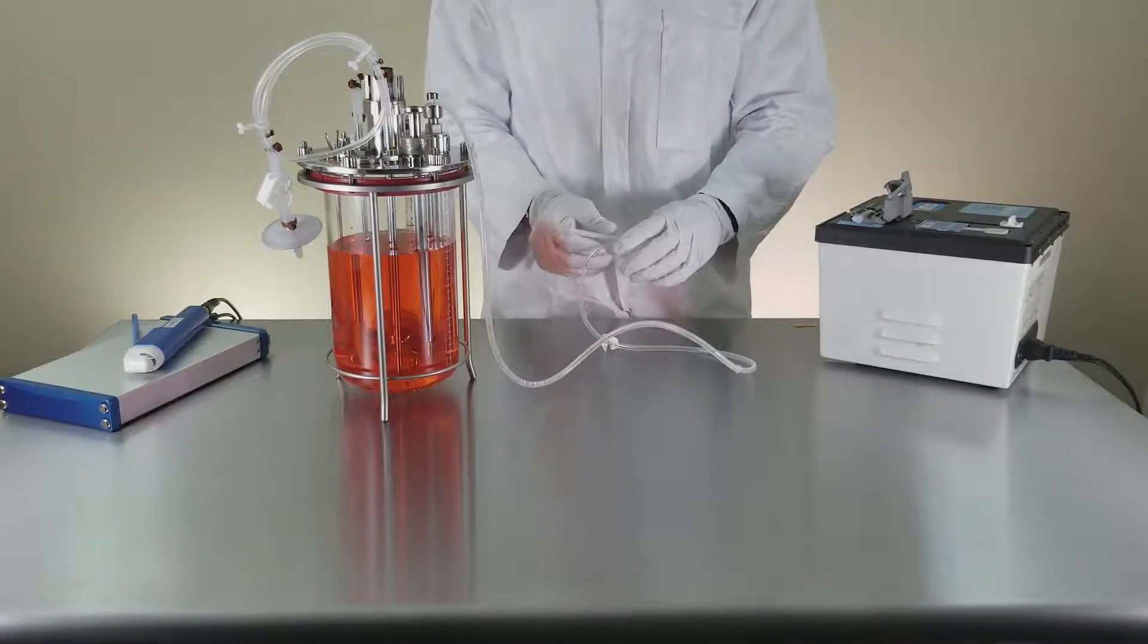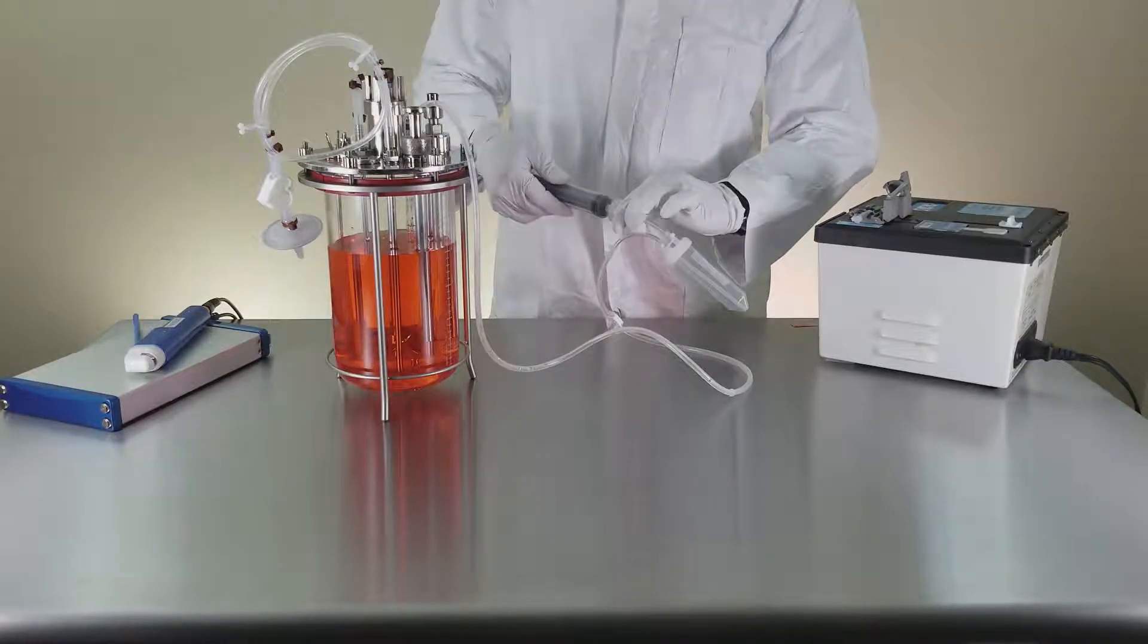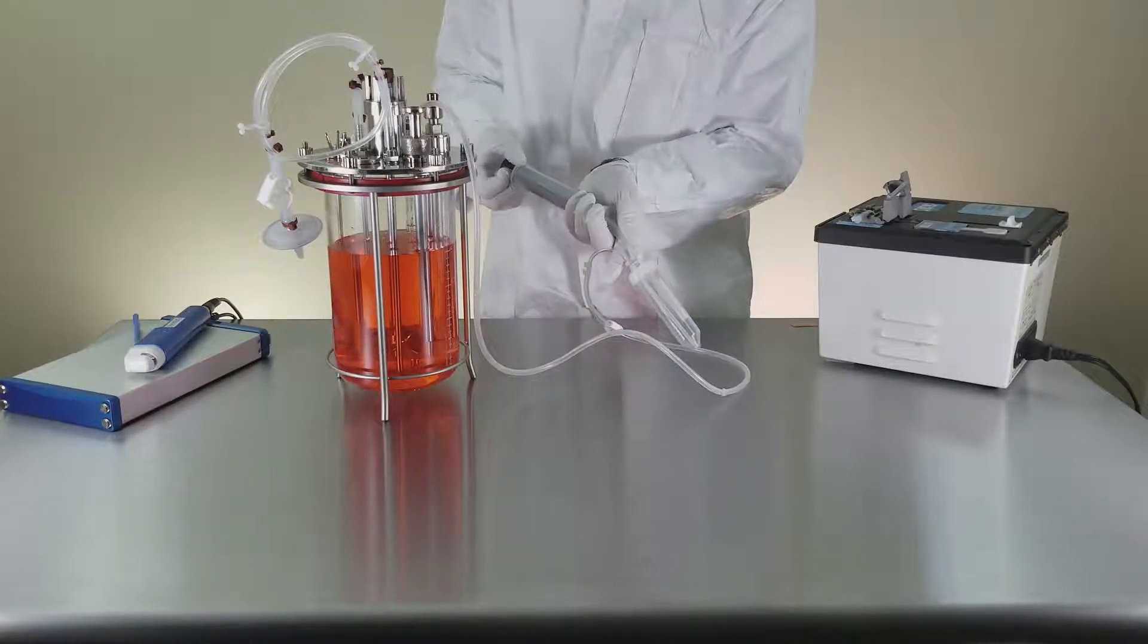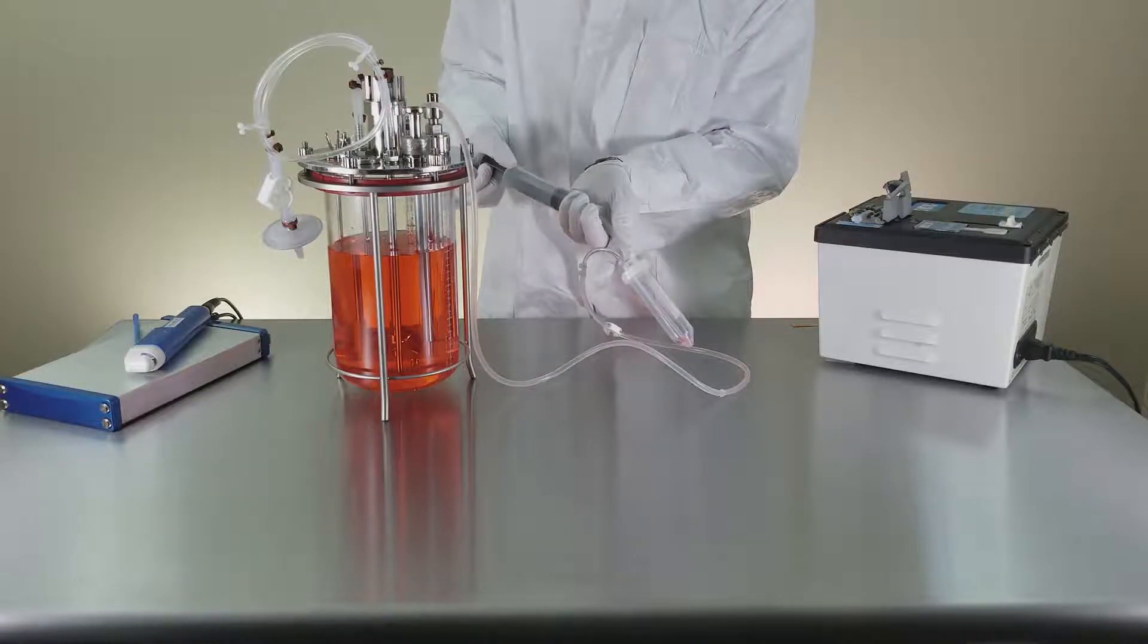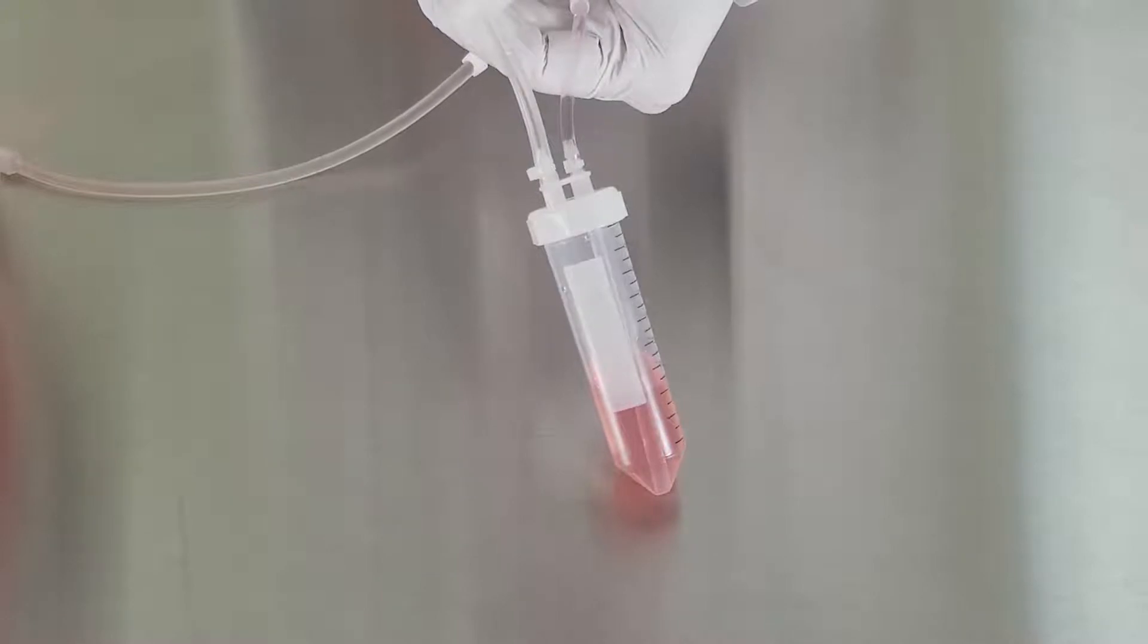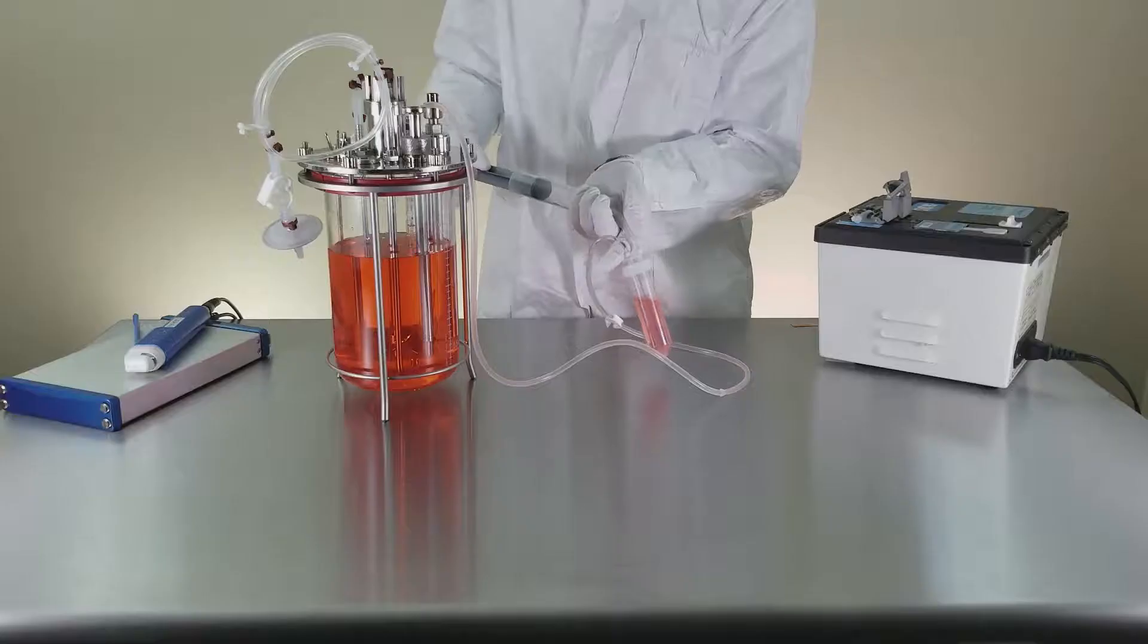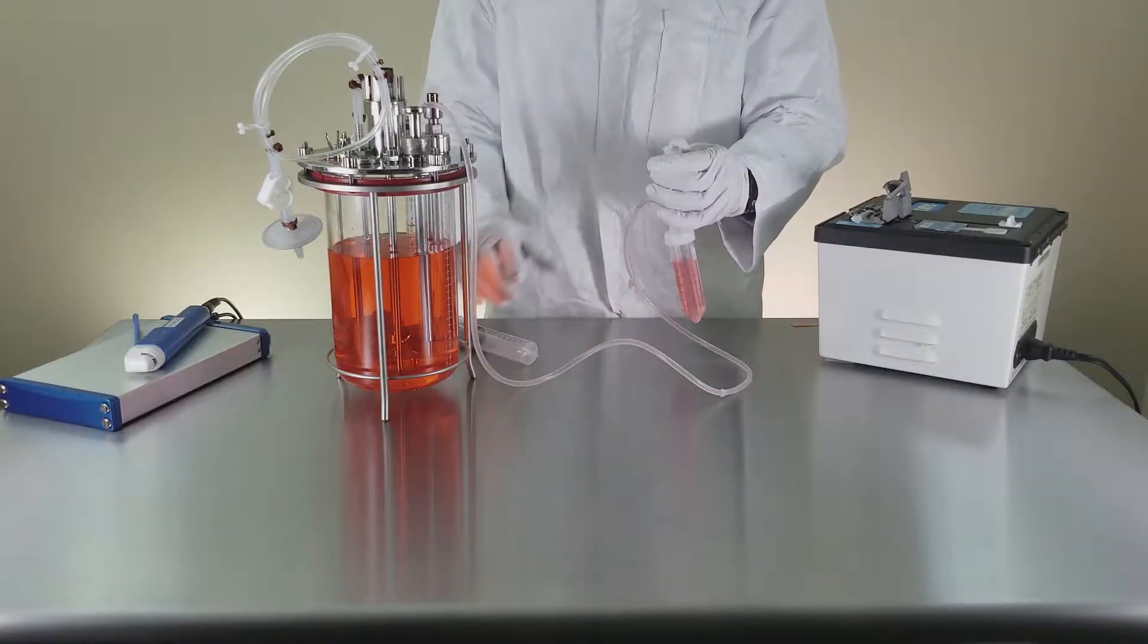To take a sample from your bioreactor, connect a simple non-sterile syringe to the sterilizing grade filter on the Omnitop. By simply pulling back on the syringe, you'll create a small vacuum inside the Omnitop that will draw your sample from the bioreactor into the tube. You can now disconnect your syringe from the filter.